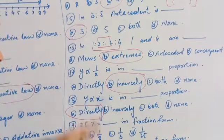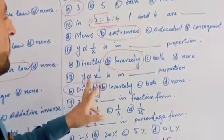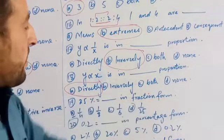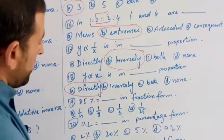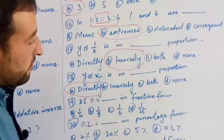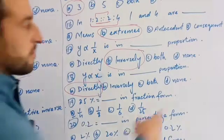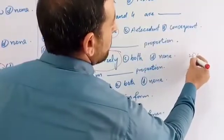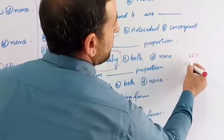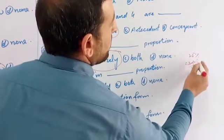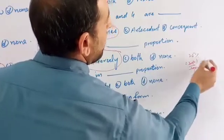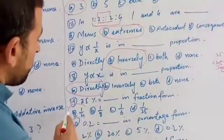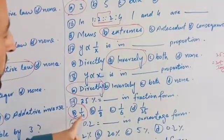Now showing the data: which number is 25% equal to in fraction form? If I have fraction form — 25 percent — the options are 1 over 4, 1 over 8, 1 over 6, and 1 over 25. 25% equals 1 over 4, so 1 over 4 is the answer.